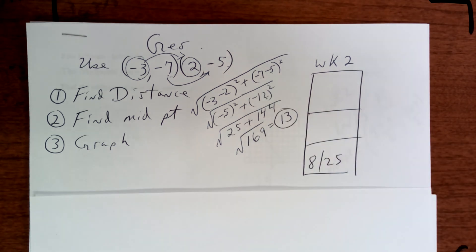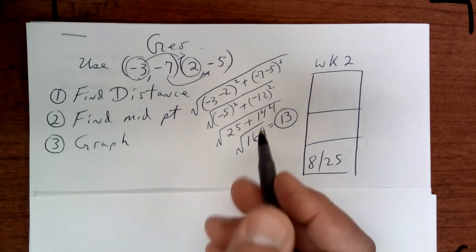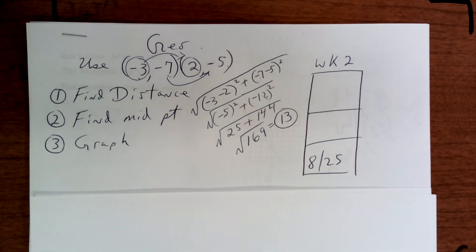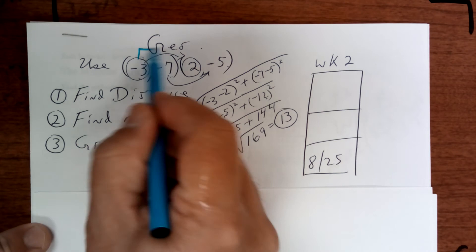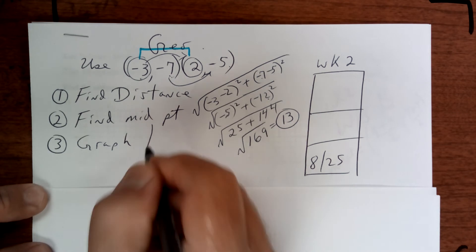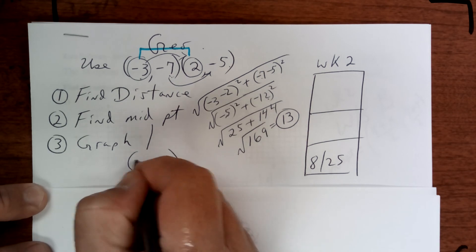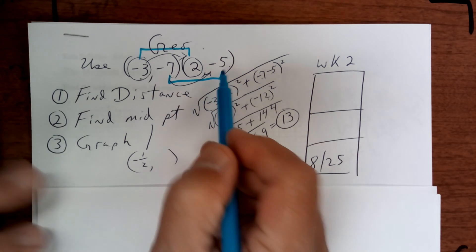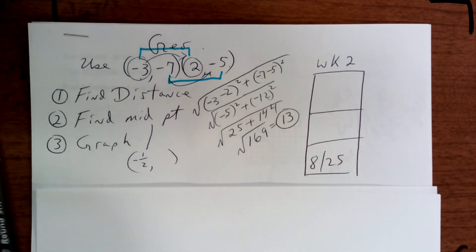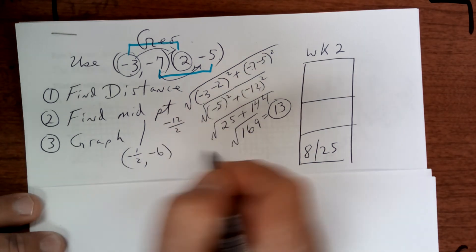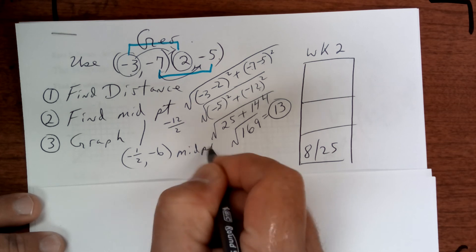The next one says find the midpoint. To do the midpoint, you add up your X's: this one plus this one gives negative 1 over 2. So your midpoint X is negative 1 over 2. Then for the Y's, negative 12 divided by 2 is negative 6. So that's your midpoint.